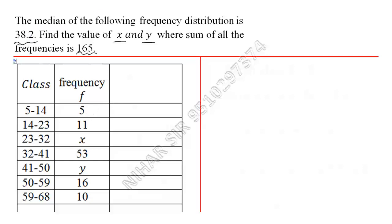So here median is 38.2. Directly we will find the median class. How can we find 38.2? 38.2 is between 32 to 41, right? So this is my median class directly.